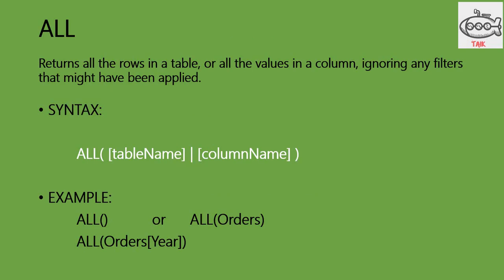ALL. The ALL function returns all rows in a table or all the values in a column, ignoring any filters that might have been applied. In general, it returns all the rows of a table or a column — do not worry about any filters that are applied on that page.